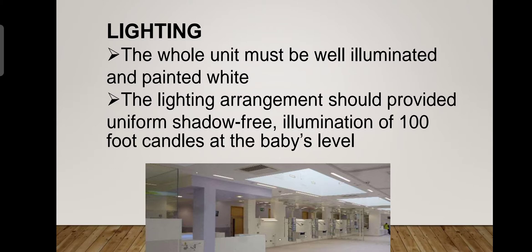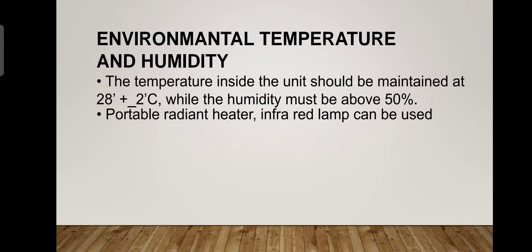The whole unit must be well illuminated and painted white. The lighting arrangement should provide uniform shadow-free illumination of 100 foot-candles at the baby's level. The temperature inside the unit should be maintained at 28 degrees Celsius plus or minus 2 degrees, while humidity must be above 50%. A portable radiant heater or infrared lamp can be used and moved from place to place as needed.